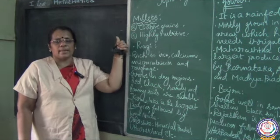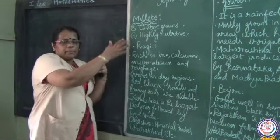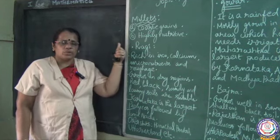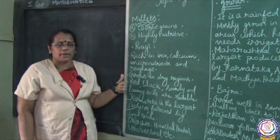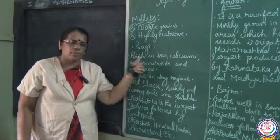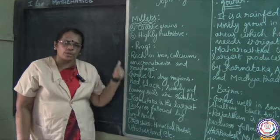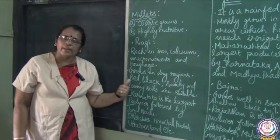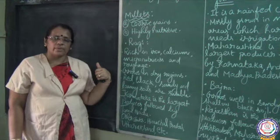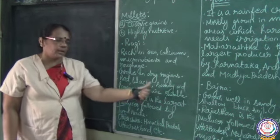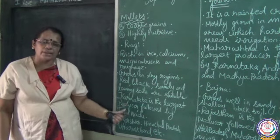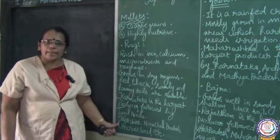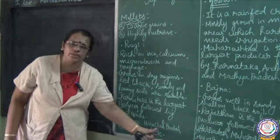To summarize: millets are coarse grains and highly nutritive. The important millets grown in our country are ragi, jowar and bajra. Ragi is rich in iron, calcium, micronutrients and roughage. It grows even in dry regions in red, black, sandy and loamy soils. Karnataka is the largest producing state, followed by Tamil Nadu. Other states include Himachal Pradesh and Uttarakhand.